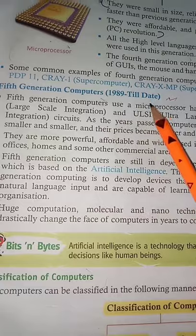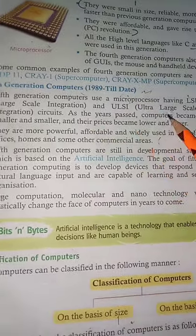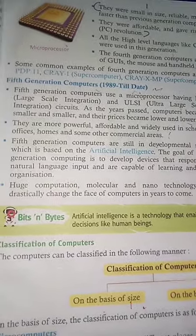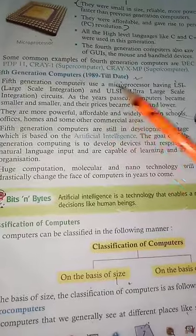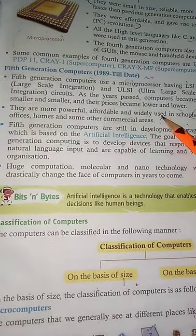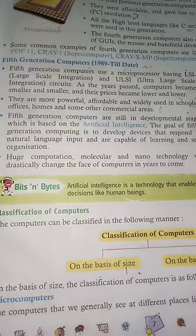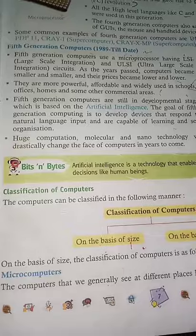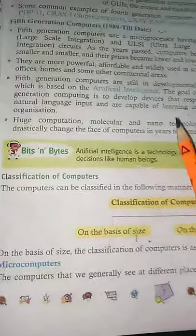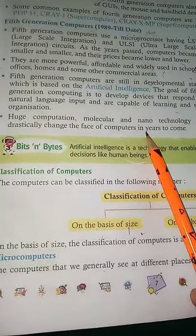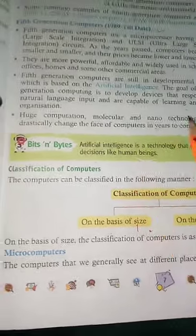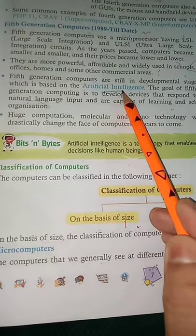Fifth generation के computer 1989 से लेके आज तक चल रहे हैं। इनमें microprocessor, large scale integration और ultra large scale integration circuit यूज किए जाते थे। हर साल computer छोटे होते गए और price भी कम होता गया, ताकि हर घर, school और office में computer use किया जा सके। इस generation की development stage artificial intelligence के रूप में आई।